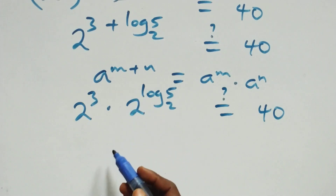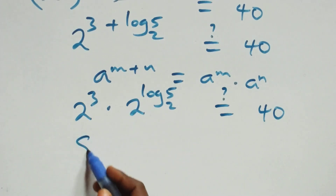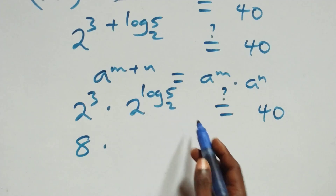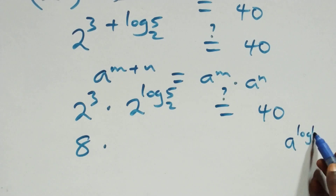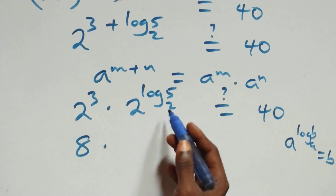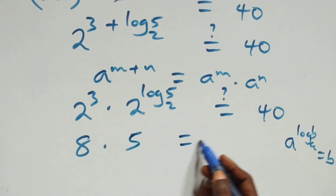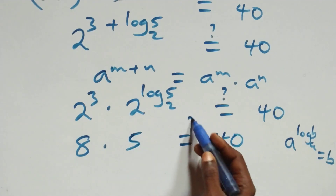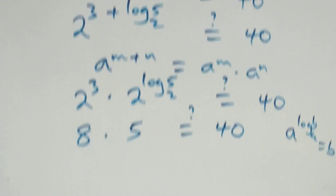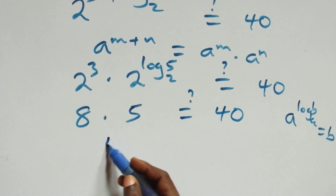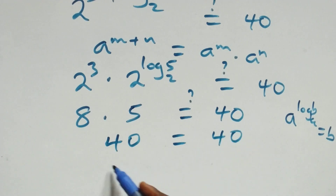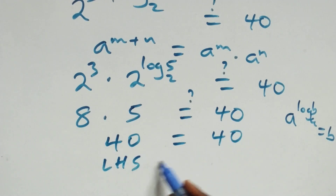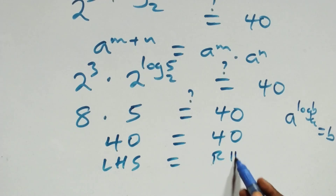2 raised to power 3, which is 2 multiplied itself 3 times, that's 8. Then, using the rule that a raised to power log b to base a equals b, 2 raised to power log 5 base 2 equals 5. So this is the same thing as 8 times 5 equal to 40, which is equal to 40. We have left-hand side equals right-hand side.